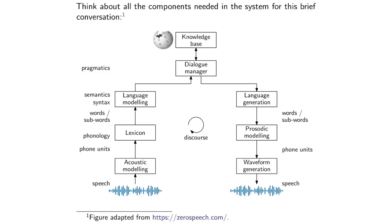A sequence of words alone isn't enough information to generate a waveform. So we would probably pass that through a prosodic modeling component, which does things like insert rhythm, intonation, and stress — things you don't get just from the words. The prosodic modeling block outputs things that look like phones again, and then that gets passed into a waveform generation module that outputs the waveform I can listen to.